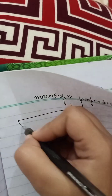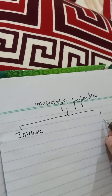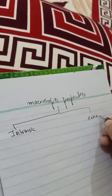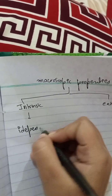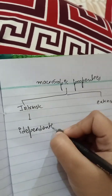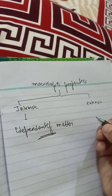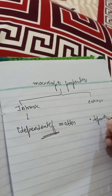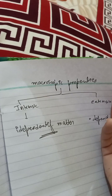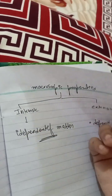Macroscopic properties have two types: first is intrinsic, second is extrinsic. Intrinsic basically means it is independent of the amount of matter — it does not depend upon the amount of matter present in the system. Extrinsic means it does depend on the amount of matter present in the system.